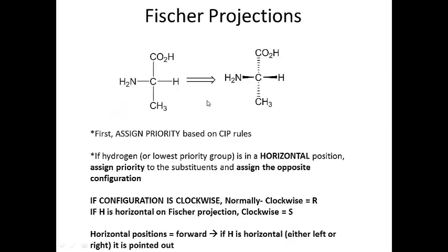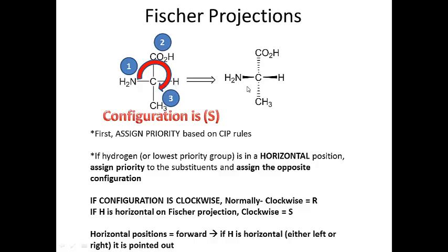Now let's look at another example where the hydrogen is no longer vertical but horizontal. Remember, if it's horizontal, that means it's on a wedge. There's a little trick you have to remember here: assign priority, and looking at this example, the priority one, two, three is actually clockwise. However, if the hydrogen is on a horizontal line, meaning it's on a wedge, there's an important adjustment to make.